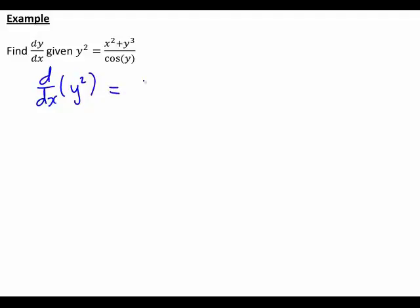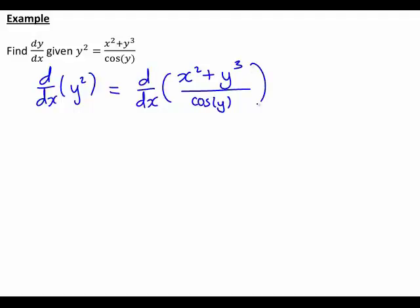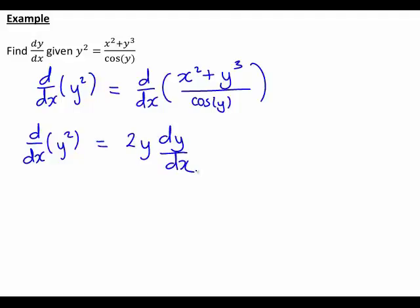The derivative with respect to x of y squared will equal the derivative with respect to x of x squared plus y cubed divided by cos y. On the left side, the derivative of y squared with respect to x: since it's a function of y, we differentiate y squared with respect to y to get 2y, then multiply by dy/dx. Finding the derivative on the right hand side will be a little more complicated, so let's look at that in more detail.